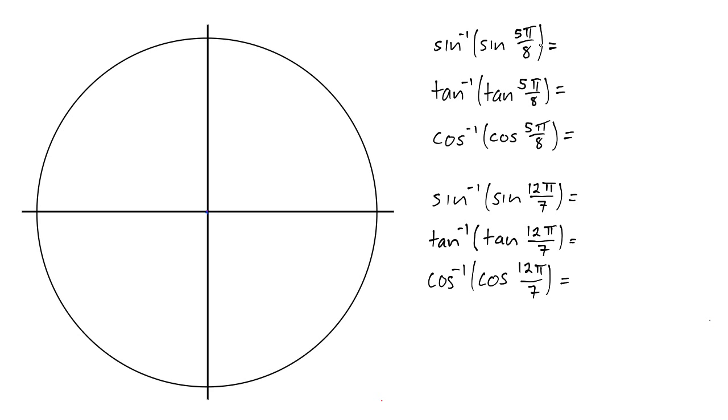So these first three examples, we have the same angle 5π over 8. Let's see where that is on a unit circle. It's a good idea whenever you're doing these to draw a circle and draw in the angle. So that's approximately 5π over 8.